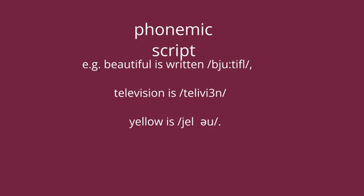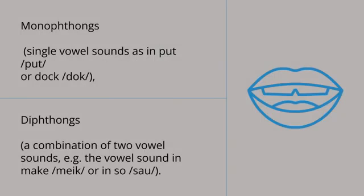Dictionaries use phonemic script to show the pronunciation of words; they usually have a list of all the phonemic symbols at the beginning of the book, together with an example of the sound each symbol represents. The symbols are often grouped into consonants and vowels, and the vowels are sometimes divided into monophthongs — single vowel sounds, as in 'put' or 'dock' — and diphthongs, a combination of two vowel sounds, e.g. the vowel sound in 'make' or 'so'. TKT and most learner dictionaries use symbols from the International Phonetic Alphabet, IPA.